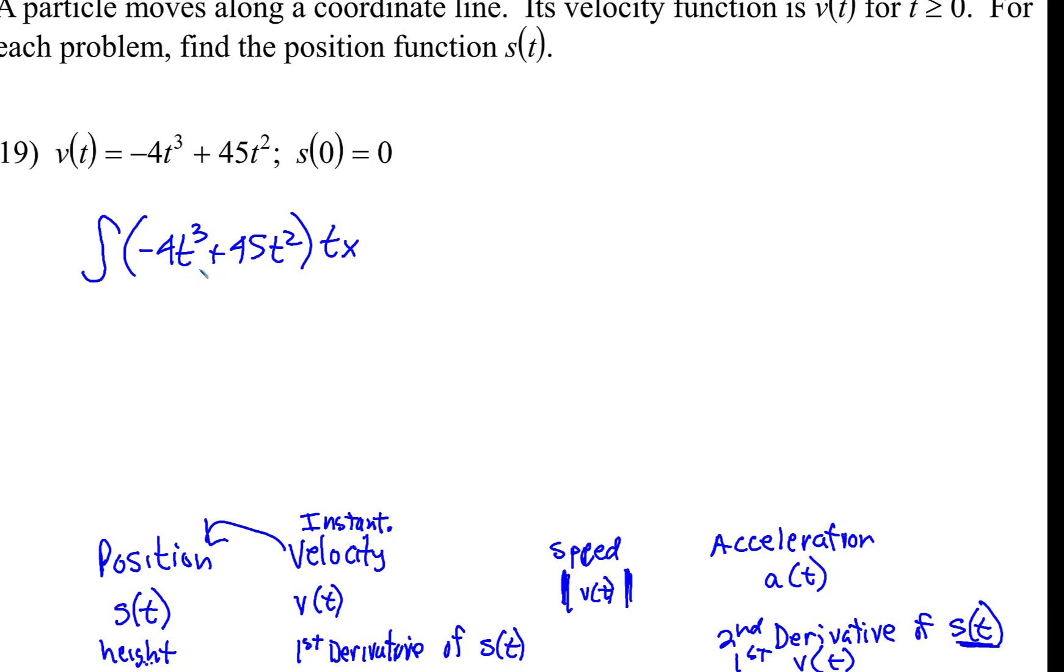Let's see. So I'm going to go ahead and get the general and then we're going to plug the zeros in. So find the position function. Okay, so negative 4t cubed, when we integrate, we're going to add a 1. So 3 plus 1 is 4. Well, that will cancel. And when we do the integration, the first one will be negative t to the fourth plus 45t squared. So I'm going to add a 1. 2 plus 1 is 3. Well, 45 divided by 3 is 15. So plus 15t cubed.